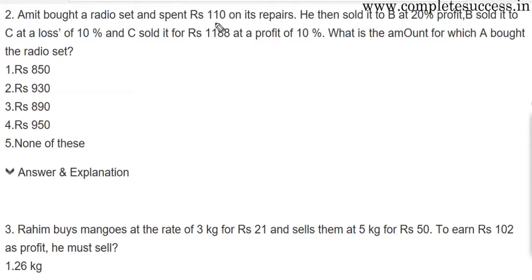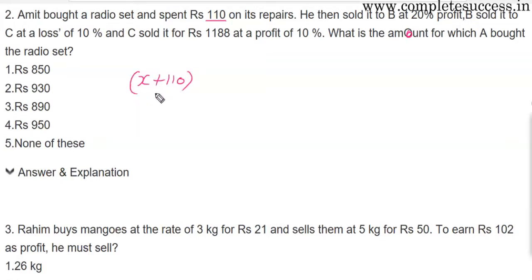Amit bought a radio set and spent Rs.110 on its repairs. He sold it to B at 20% profit. B sold it to C at a loss of 10%, and C sold it for Rs.1188 at a profit of 10%. We assume the radio set was bought for Rs. x, so his actual cost price becomes x plus 110.